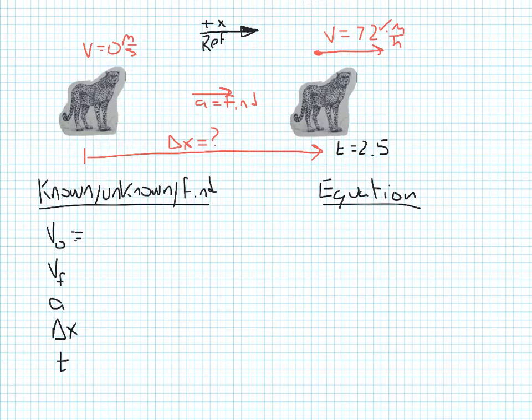So we've already said that we know that this cheetah is going to start at rest. So that's zero meters per second. We know that he's going to attain some speed of 72 kilometers per hour.